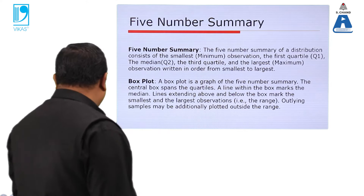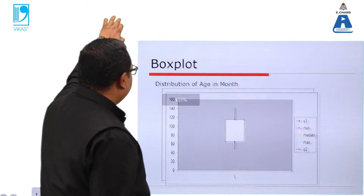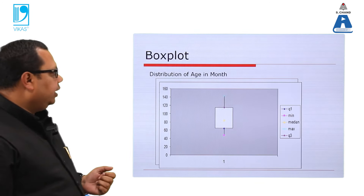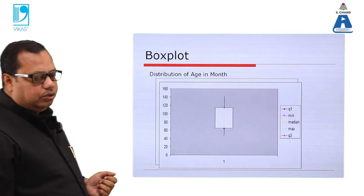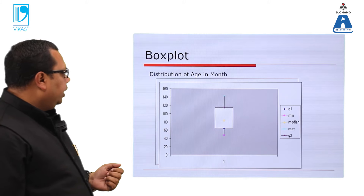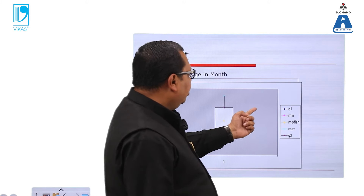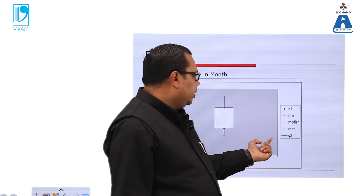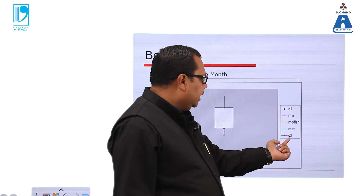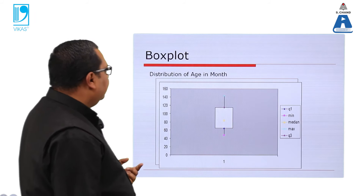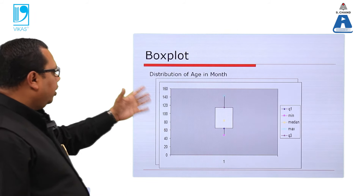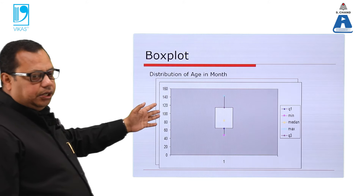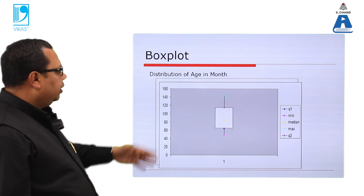From the five-number summary we construct a box plot. In the box plot we show Q1, Q3, the minimum, the maximum, and the median. Here Q1 is shown in blue, minimum in pink, median in yellow, maximum in sky blue, and Q3 in green — each represented with a different color in the box.